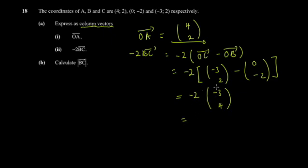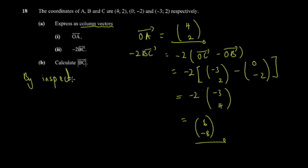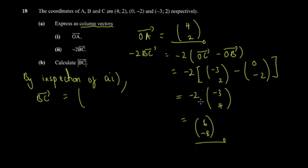Now complete the scalar multiplication: -2 × (-3) = 6, and -2 × 4 = -8. So -2·BC = (6, -8). Then you're asked to calculate the magnitude of BC. By inspection from part (a), BC = (-3, 4).